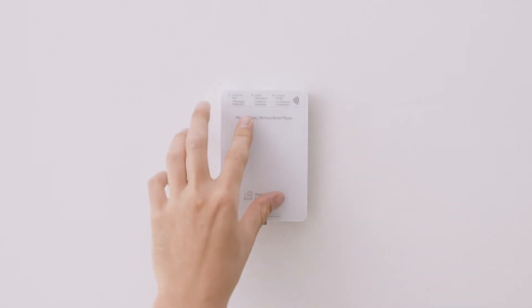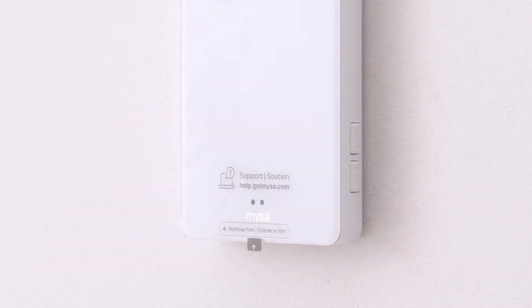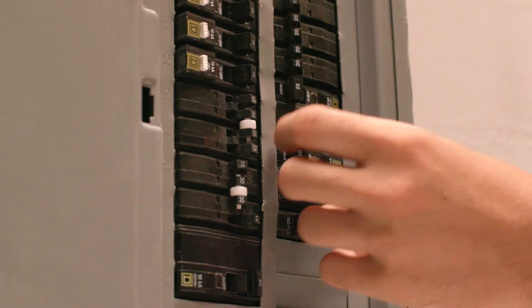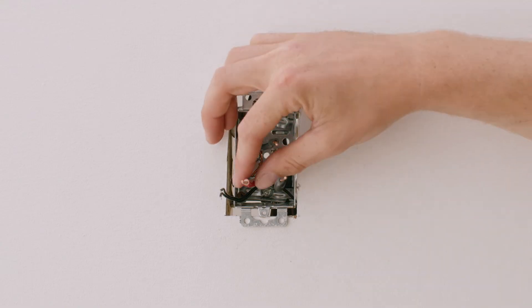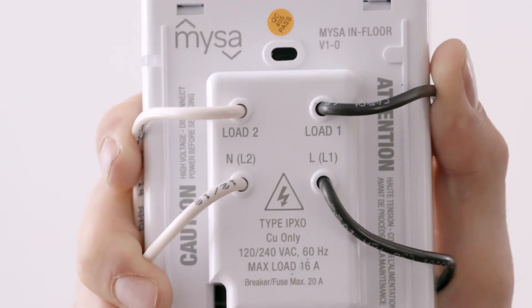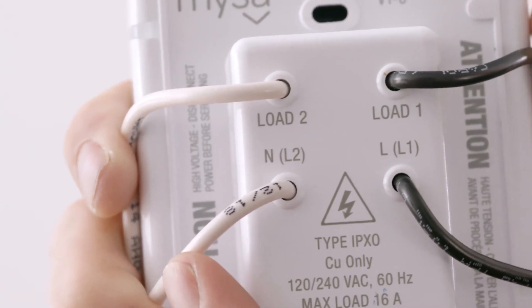Now, we're replacing the faceplate and tightening the set screw. We'll go back to our electrical panel at this point and turn our breaker back on to power up Mesa. If Mesa does not power up, turn the breaker off and try swapping both sets of black and red wires or both sets of black and white wires. So, you'll swap the L1 wire with load one wire and the L2 wire with load two wire before you turn the breaker back on.